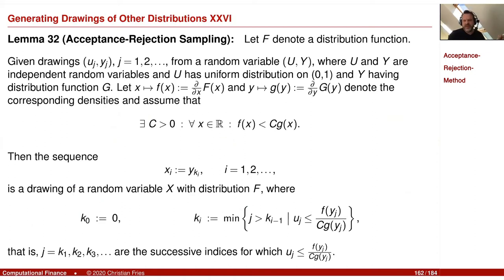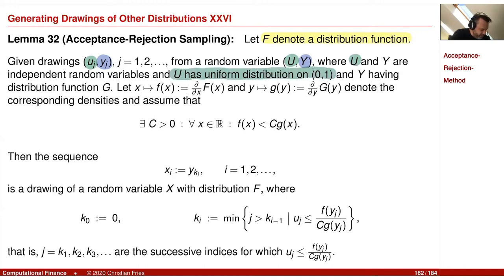This is the corresponding lemma for acceptance-rejection sampling. Let f denote a distribution function for which we would like to generate a sequence. Given a two-dimensional sequence (u_i, y_i) — a sequence of two-dimensional vectors of random variables u and y — where u is uniformly distributed on (0,1) and y is g-distributed, as mentioned in the motivation. In addition, both must be independent.